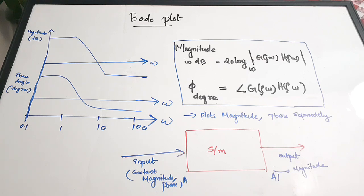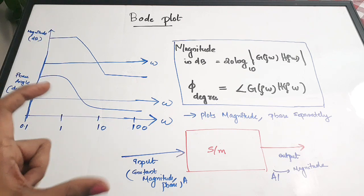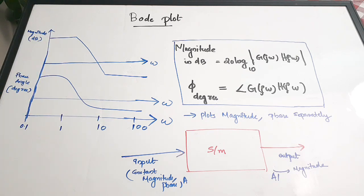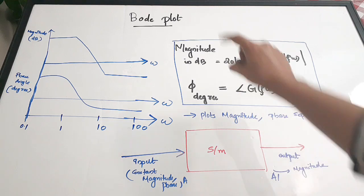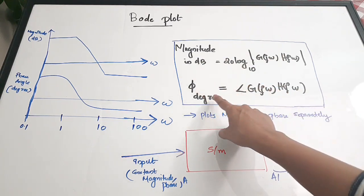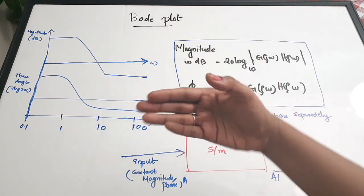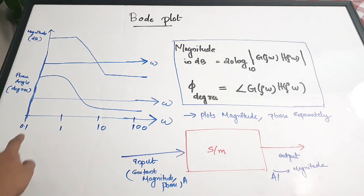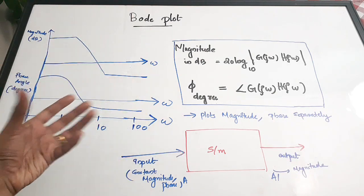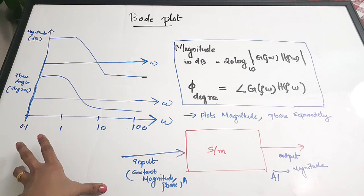In bode plot stability analysis, we take a transfer function — the characteristic equation — and plot the magnitude and phase plots separately. Then we define certain stability conditions and check whether the given plot of the system satisfies those conditions. If it is not satisfying, the system is not stable; if it is satisfying, it is stable. The magnitude is given in dB and phase is in degrees, and both are drawn on a logarithmic graph.